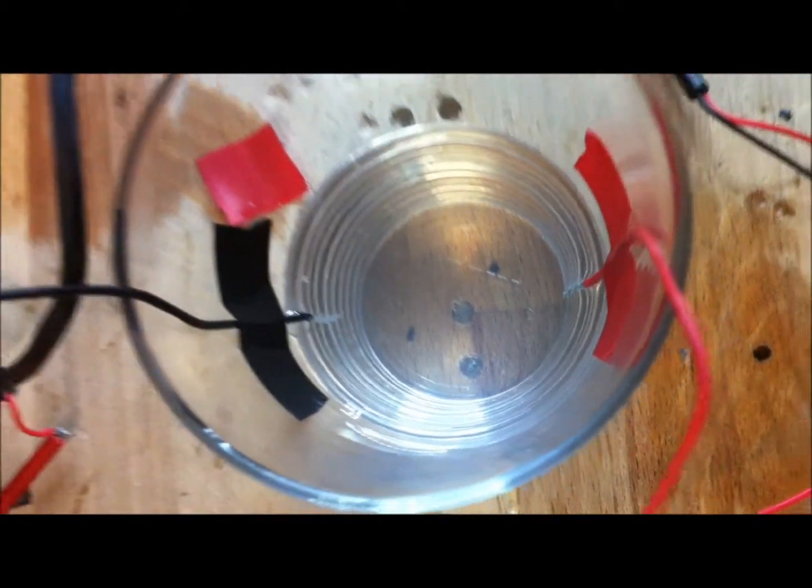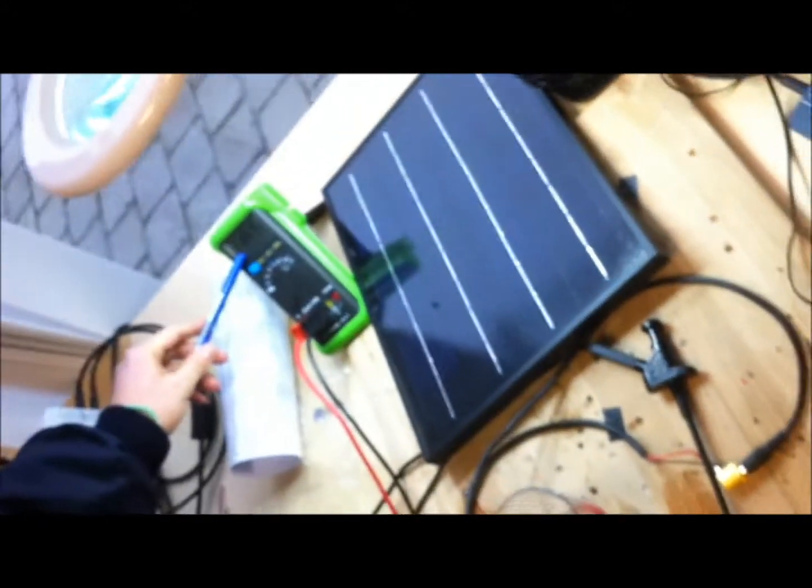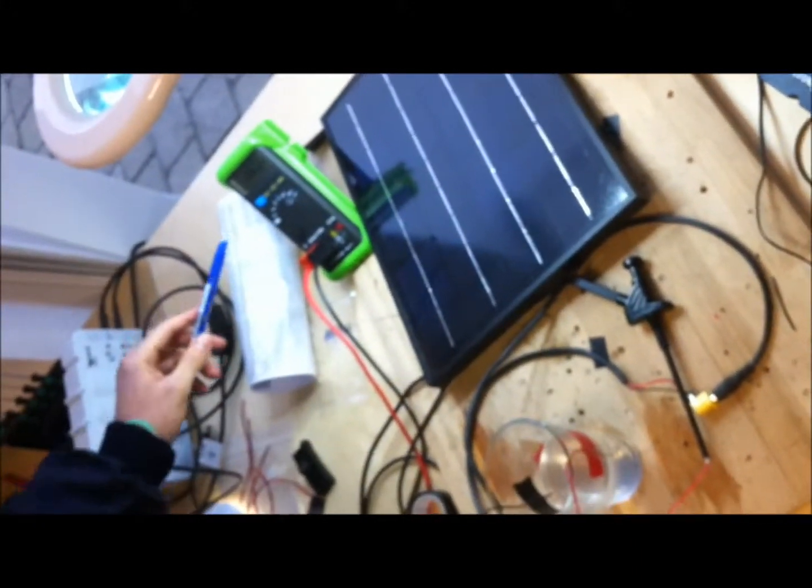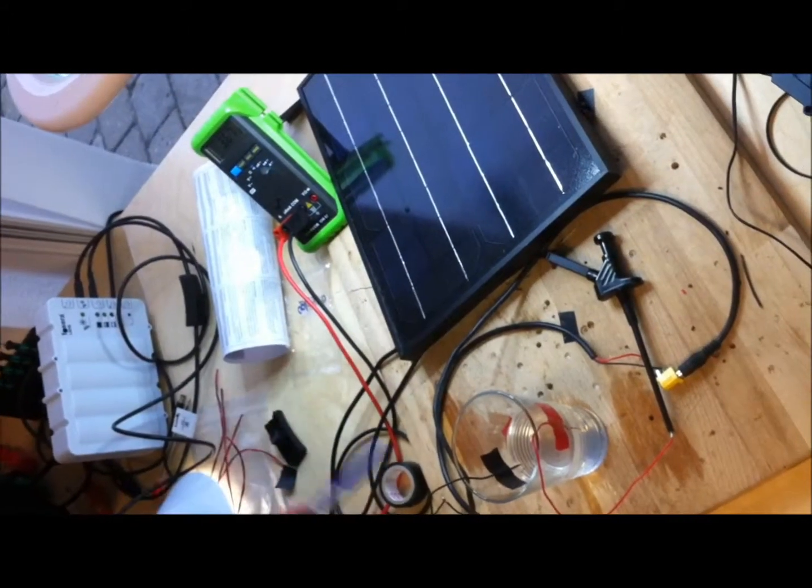And the important thing is that there is a current being generated, for example, of 3.6 milliamps in this moment, connecting the solar panel with the water.